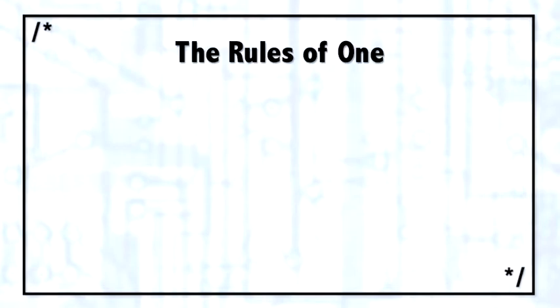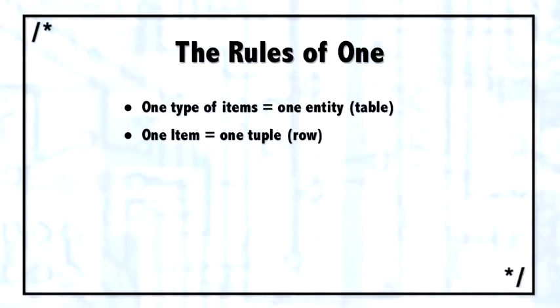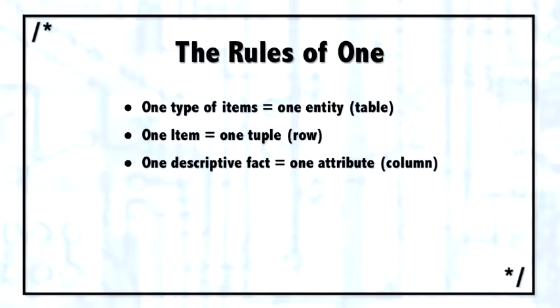Let me explain. If you take one type of items or one group of things, they should all be together inside of one table. Each one item should be represented in a table by one row or one tuple. Each one descriptive fact or one attribute about those items should be represented in one attribute or one column in the database.